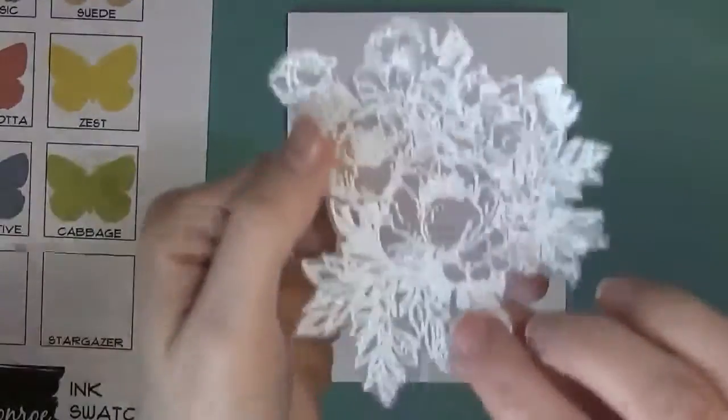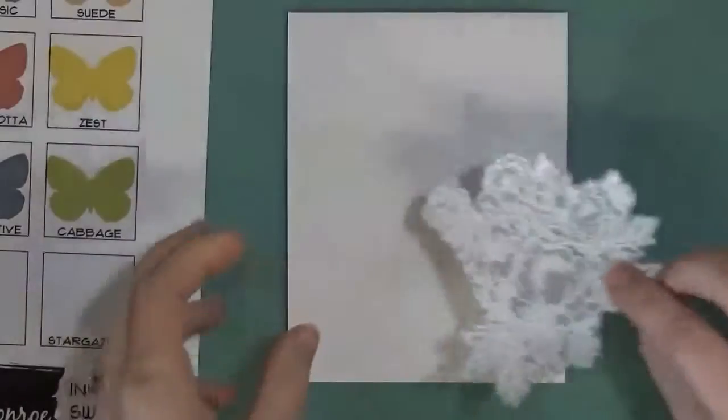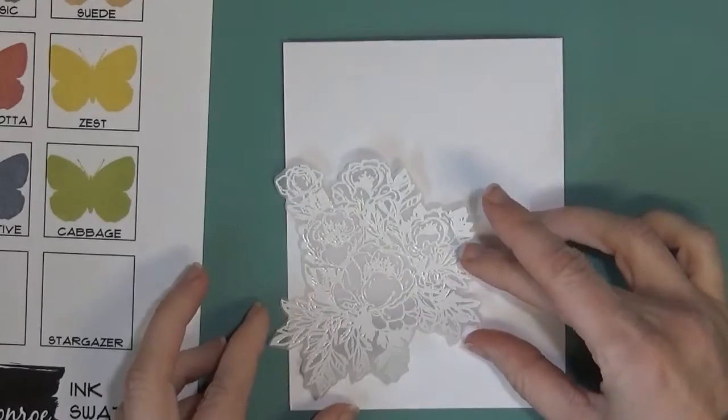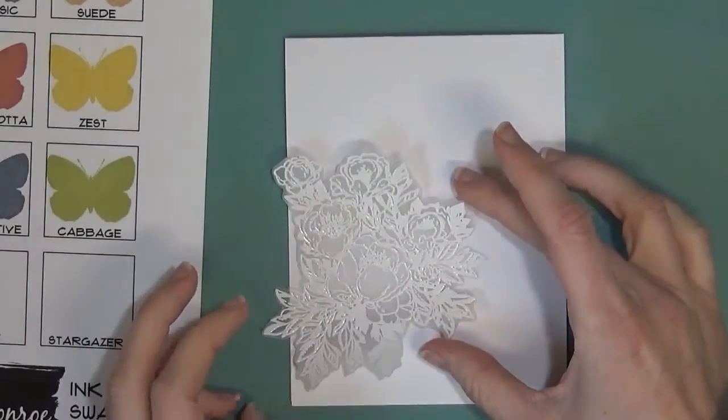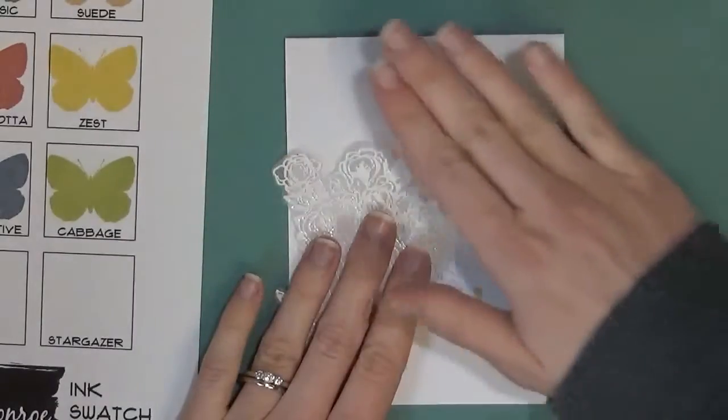So here is my flower all embossed on vellum and cut out. And I have my card base here. Now I want to do some ink blending on the background. I think I want to keep my flowers right here. I'm going to be adhering them down here. So I want to do some colors behind it.